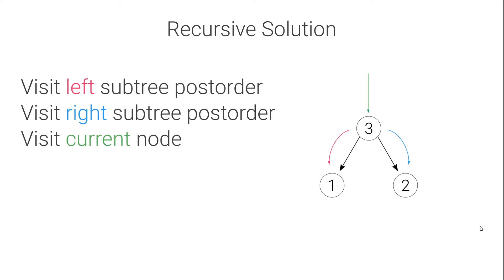Let's see how to do the post-order traversal of a binary tree using the recursive algorithm. The idea is to start at the root node and then first visit the left subtree post-order, then visit the right subtree post-order, and finally visit the current node.